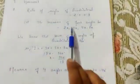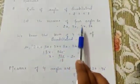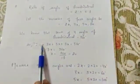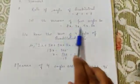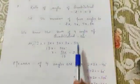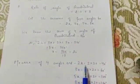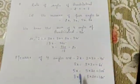So here ratio was given, we took the measure as 2x, 3x, 5x, 8x and used the angle sum property — the sum of these angles is 360 degrees. So the value of x is 20 degrees. After that we found the measure: 2 × 20, 3 × 20, 5 × 20, and 8 × 20.